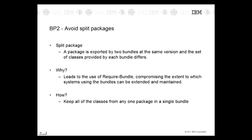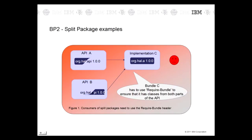Best practice two: avoid split packages. A split package occurs when a package is exported by two bundles at the same version and the set of classes provided by each bundle differs. Classes may be duplicated, or more typically, part of the package is in one bundle and the remainder is in another. A split package leads to the use of Require Bundle. For example, bundle C has to use Require Bundle to ensure that it has classes from both parts of the API bundles.